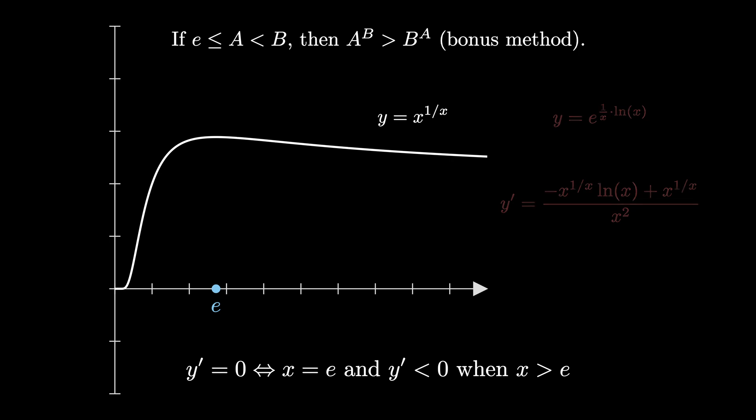But once you know these facts, the resulting computation isn't too difficult. Because a is less than b, and a maps to a to the 1 over a, and b maps to b to the 1 over b, and the function is decreasing, we see that a to the 1 over a is greater than b to the 1 over b. Raising both sides to the a times b, we see that a to the b is greater than b to the a.